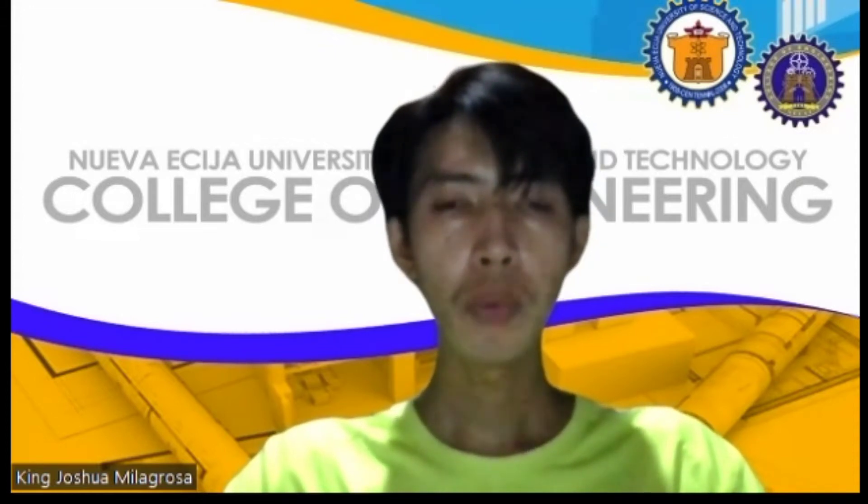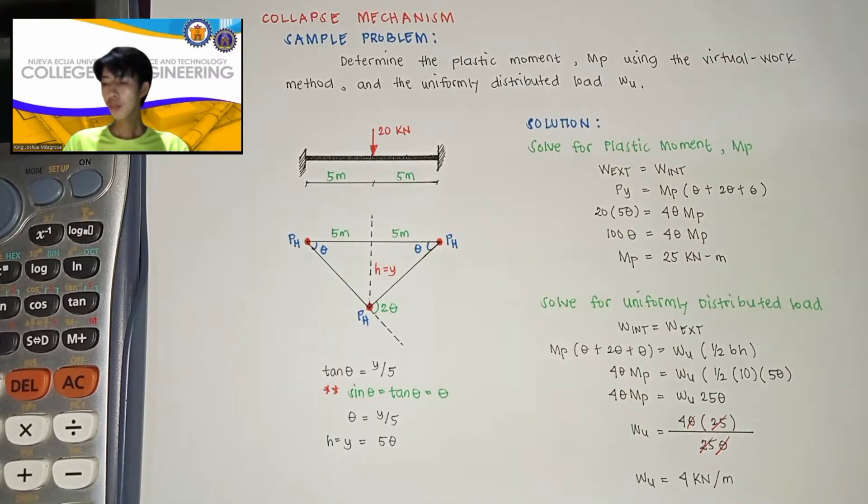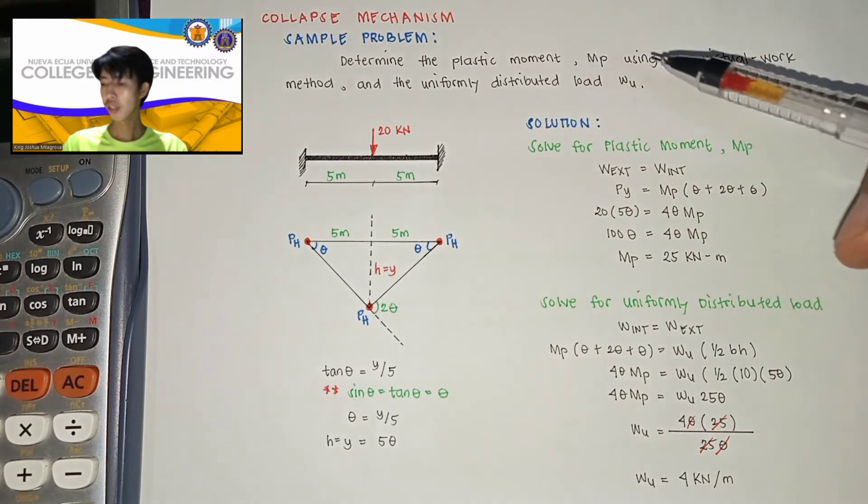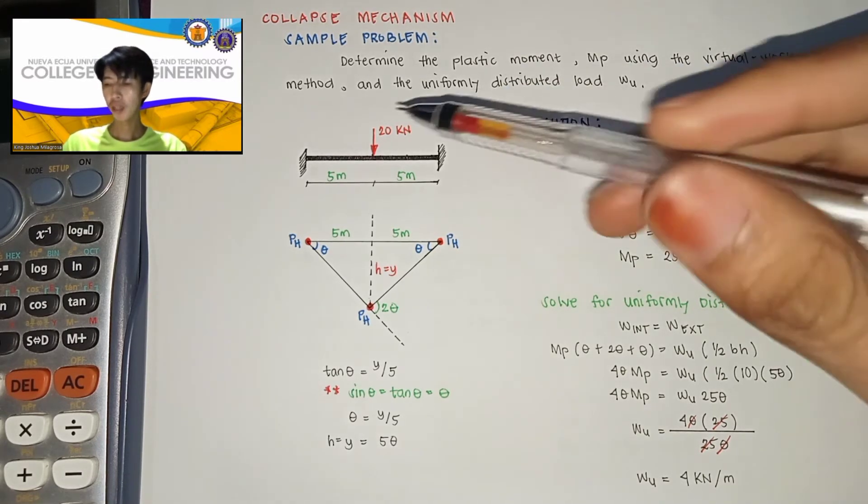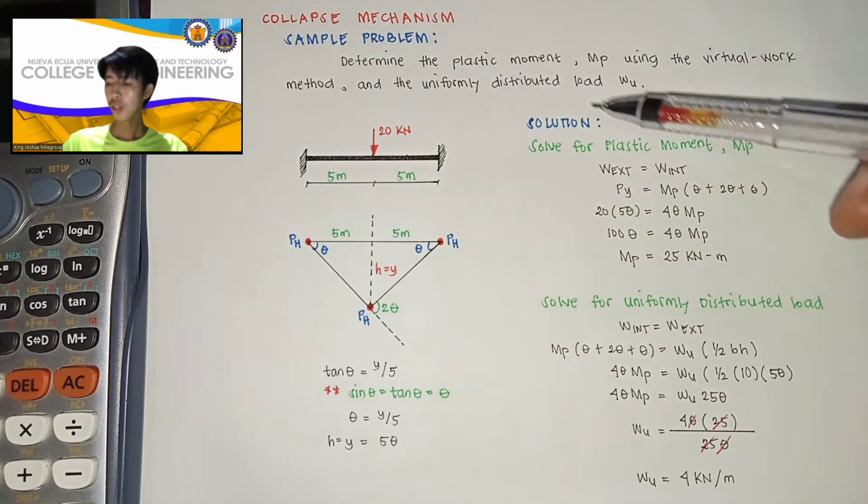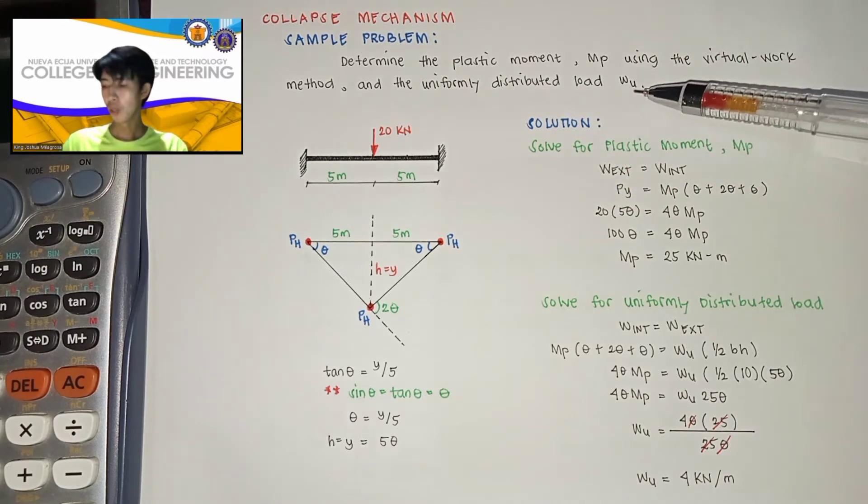Today I will be discussing a sample problem about collapse mechanism. For this sample problem, determine the plastic moment MP using the virtual work method and the uniformly distributed load W.